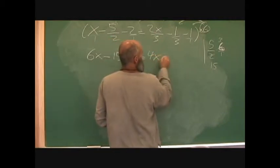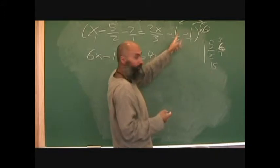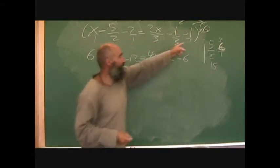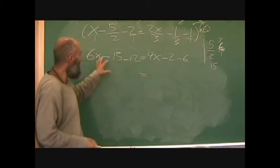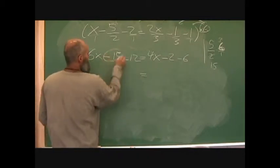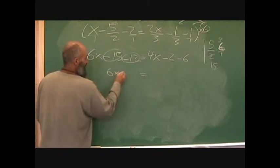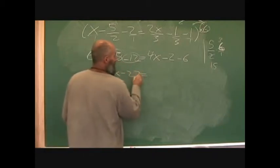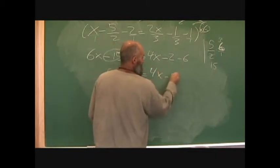So it's going to be four x. Then minus six, because it's just one times six. Line up your equal sign and combine like terms on either side of the equation. This gives us six x minus fifteen minus twelve, which is negative twenty-seven, equals four x minus eighteen.